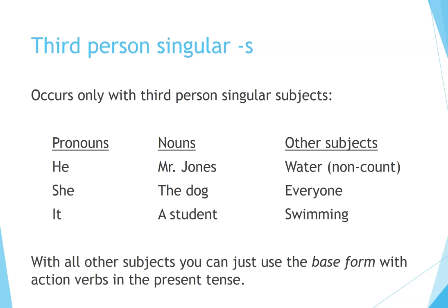Third person singular S occurs only with third person singular subjects. For example, pronouns: he, she, it. Nouns: Mr. Jones, the dog, a student. Other subjects: water (non-count), everyone, swimming. With all other subjects, you can just use the base form with the action verbs in the present tense.